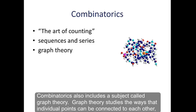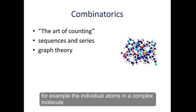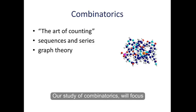Combinatorics also includes a subject called graph theory. Graph theory studies the ways that individual points can be connected to each other. For example, the individual atoms in a complex molecule or the way roads connect cities on a map.